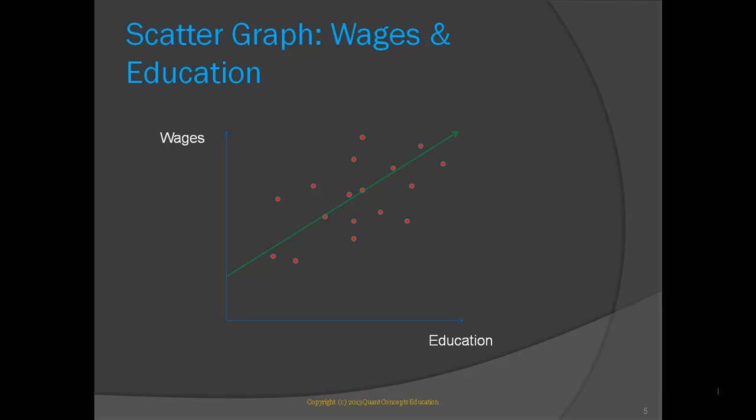Now, recall from high school maths that the equation of a line is y equals mx plus b, where m is the gradient or the slope of the line, that is, rise over run, and b is the intercept of the line, that is, where the line cuts the y-axis. In regression analysis, we represent the line as y equals beta 0 plus beta 1 x instead. All that has changed is the notation. Beta 0 is the intercept term, and beta 1 is the gradient or slope of the line.